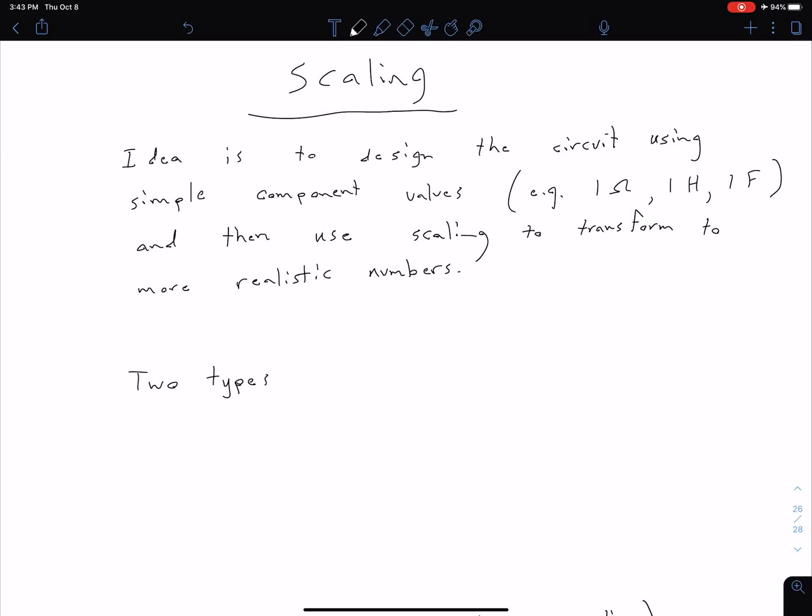The last topic we're going to cover in this unit is the idea of scaling. Scaling is a useful design idea where we can design a circuit using simpler values. For instance, maybe we want to use 1 ohm, 1 henry, 1 farad values.